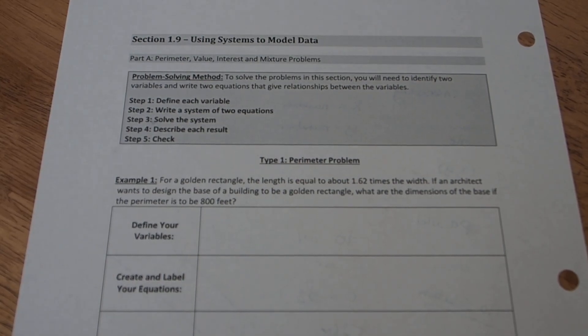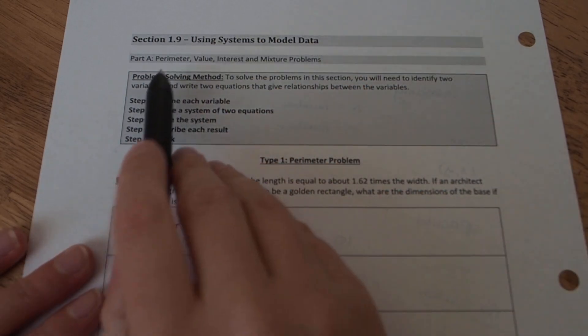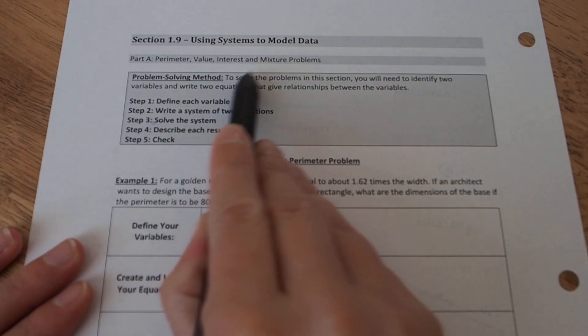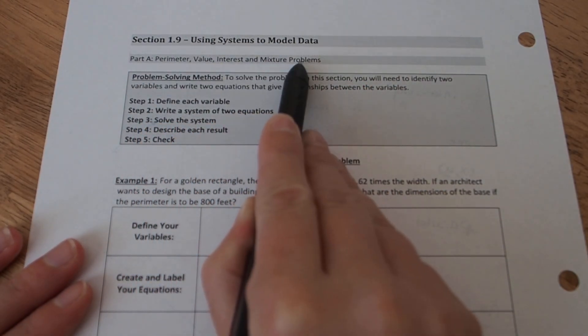Section 1.9 is on using systems to model data. In part A, we're going to look at perimeter, value, interest, and mixture problems. We're going to see one problem of each type.